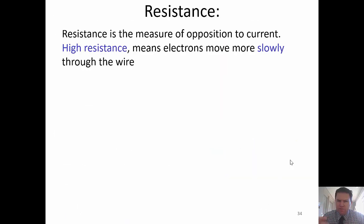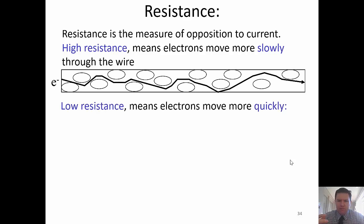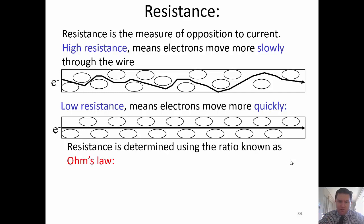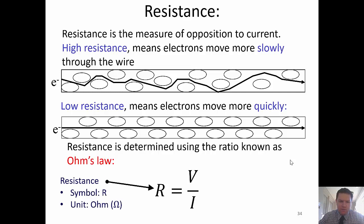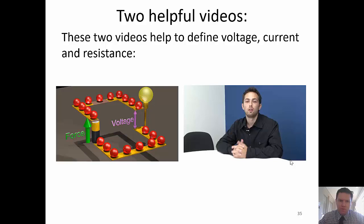Resistance is the measure of the opposition to current. High resistance means electrons move slowly through the wire; low resistance means they can zoom through. The link between current, voltage, and resistance is Ohm's law, where resistance equals voltage across a component divided by the current going through that component. A lot of level 2 is based around Ohm's law.